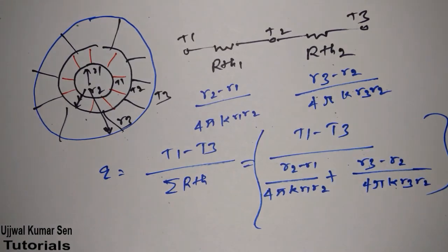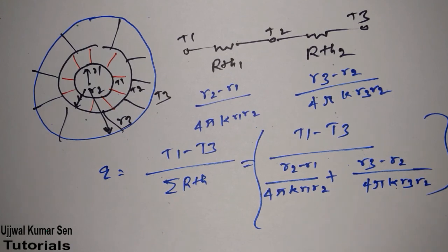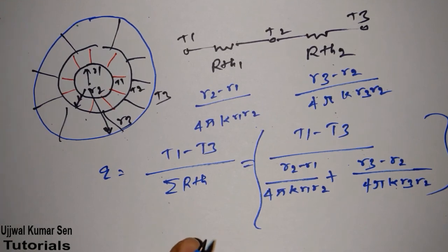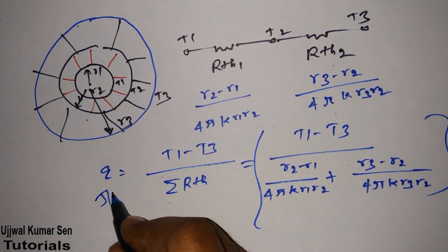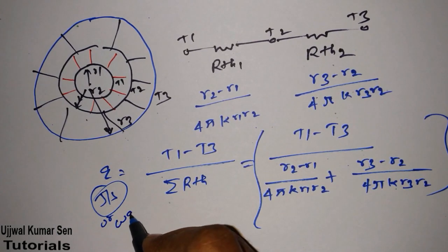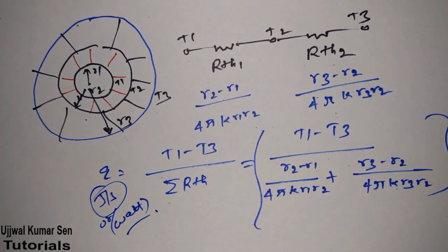Therefore: q equals (T1 minus T3) divided by [(r2 minus r1)/(4πk r1 r2) plus (r3 minus r2)/(4πk r3 r2)]. This is the total thermal resistance for the composite spherical container. The heat transfer is in joules per second or watts. That's all for this lecture — thanks for watching, see you in the next video.